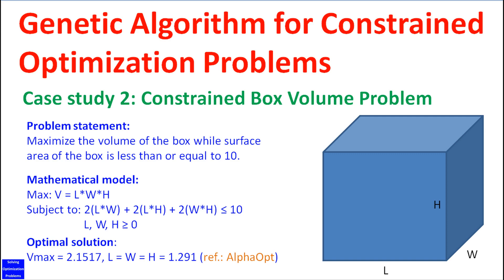This is the second case study in a series of case studies to test the outperformance of my genetic algorithm. In this case study I solve the constrained box volume optimization problem. First I run the genetic algorithm to demonstrate its performance, and then I will show you the MATLAB code so that you can copy and customize the code to solve your problems. Let's get started.